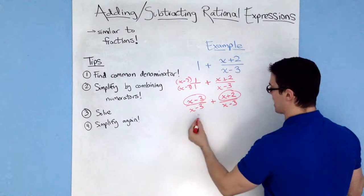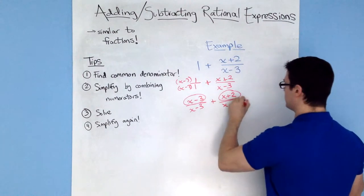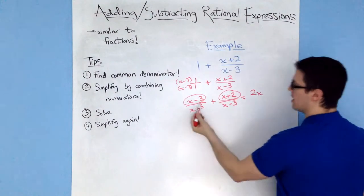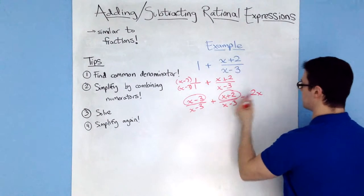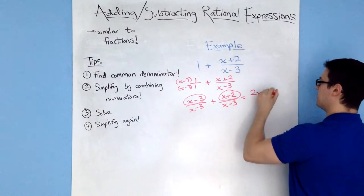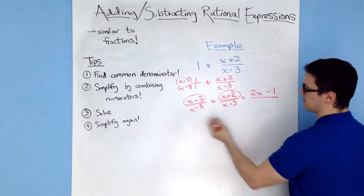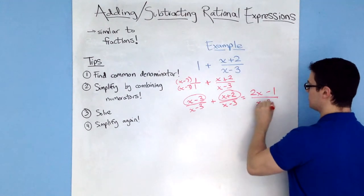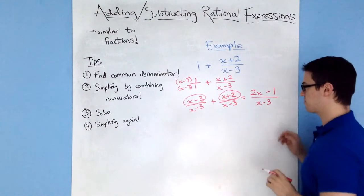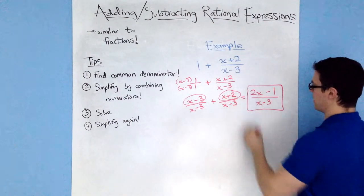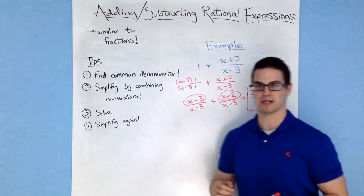So I have x plus x which is going to be equal to 2x, and then negative 3 plus positive 2 would be negative 1. Then I'm dividing it by the same denominator of x minus 3 to get the answer of 2x minus 1 over x minus 3.